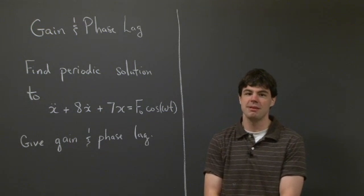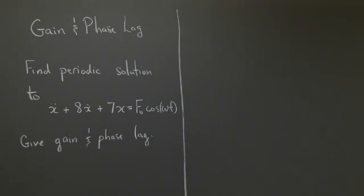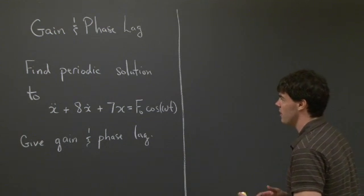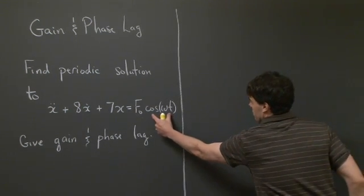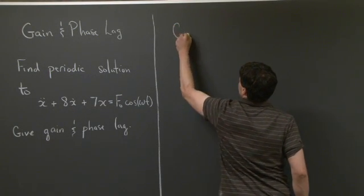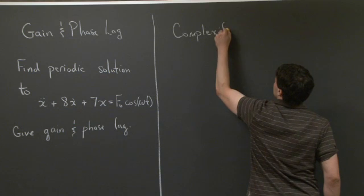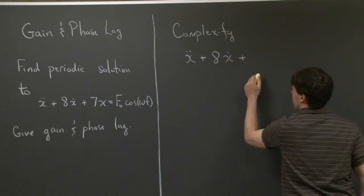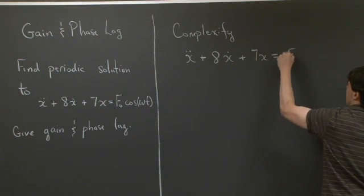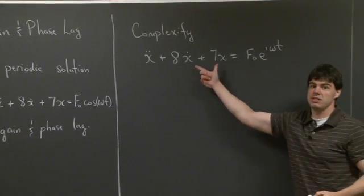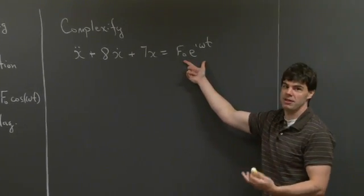I'll let you take a look at this problem and I'll be back in a minute. Welcome back. We're interested in finding this periodic solution to the differential equation, where we're forcing it with the right-hand side of cosine(ωt). The standard procedure is to first complexify. We're going to consider the differential equation x-double-dot plus 8x-dot plus 7x equals f0·e^(iωt). At the end, we take the real part of our solution, because cosine(ωt) is the real part of e^(iωt).